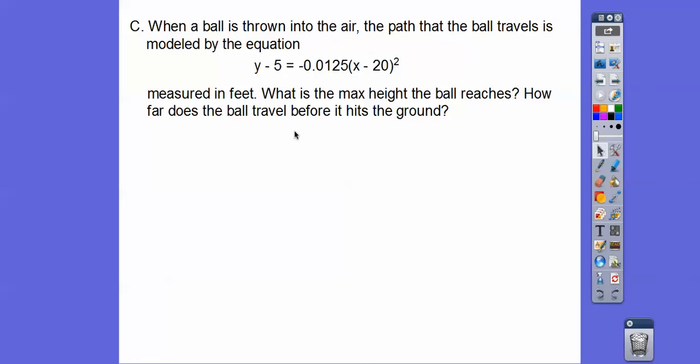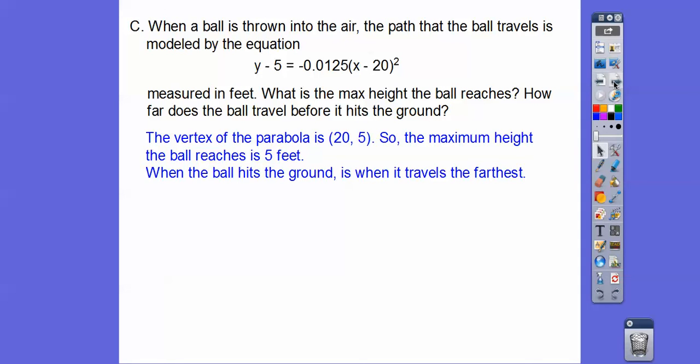And then how far does the ball travel before it hits the ground? Well, the ball hits the ground when we first start over here, and then it hits the ground over here. So how far is it going to travel from here to here? So the vertex of the parabola is at that HK, 25. So the maximum height is your Y coordinate of your vertex, which is 5, 5 feet.